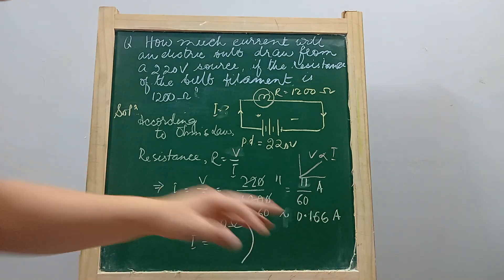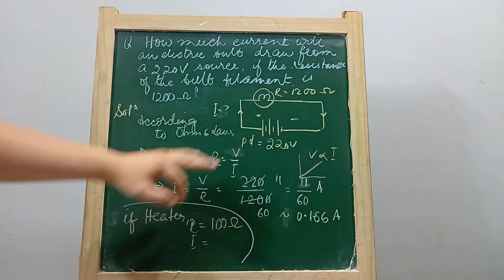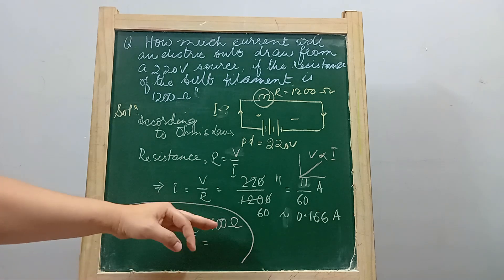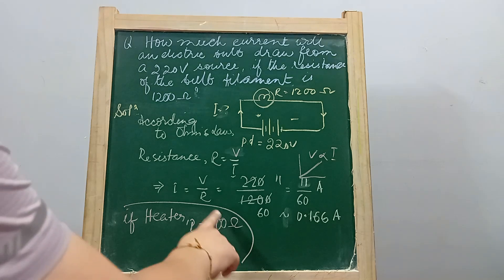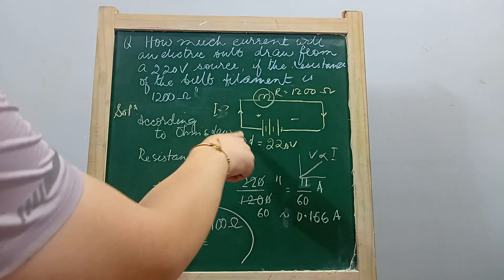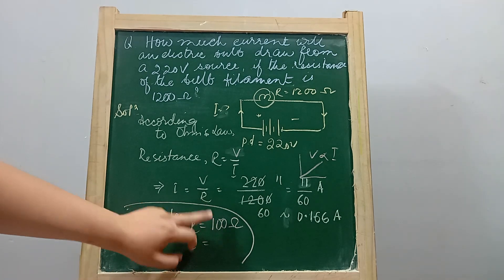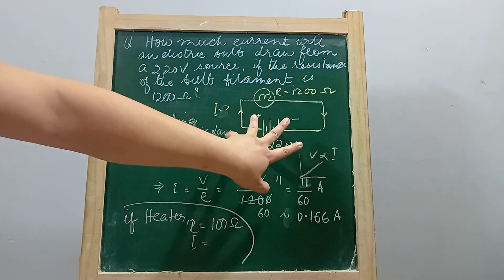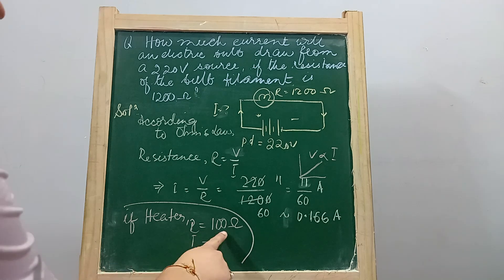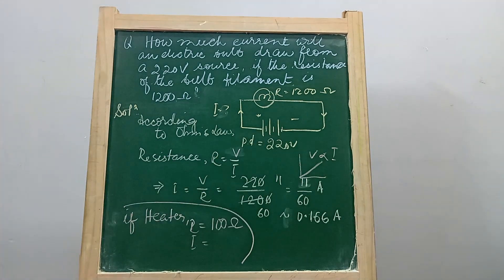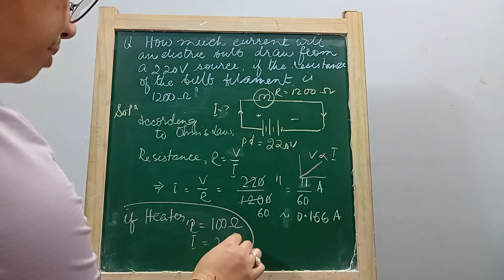Now if there is a change in the question — instead of a bulb, if it is a heater with a resistance of 100 ohms — what will the current be? Using the same relationship, with the same potential difference of 220 volts but resistance now 100 ohms: I = 220 / 100 = 2.2 ampere.